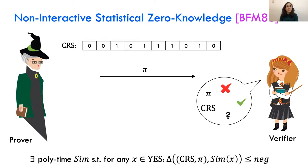First, let's recall the model of non-interactive statistical zero-knowledge. In this model, both parties get the CRS — a shared uniform random string. The prover, based on input X and the CRS, generates a proof π and sends it to the verifier. The verifier, based on X, the CRS, and π, decides whether to accept or reject. The zero-knowledge requirement is that there exists a polytime simulator such that for every yes instance X, the simulator's output is statistically close to the distribution of the CRS alongside message π.